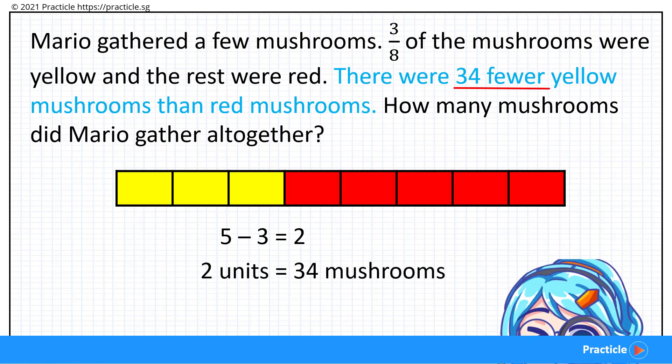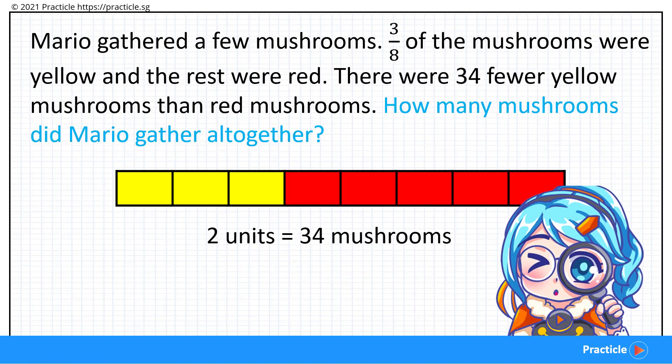Now time to read the question and see what we are supposed to solve. How many mushrooms did Mario gather altogether? Do you know how many parts we are supposed to find? If you said these 8 parts, you're right! Well done! How do you think we can find the total number of mushrooms? Well, there are actually 2 ways to do this. One is the usual way where we are going to divide 34 mushrooms by 2 to find the value of 1 part and then multiply what we have by 8 to find the value of 8 parts.